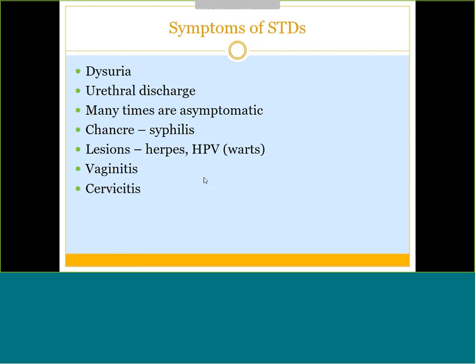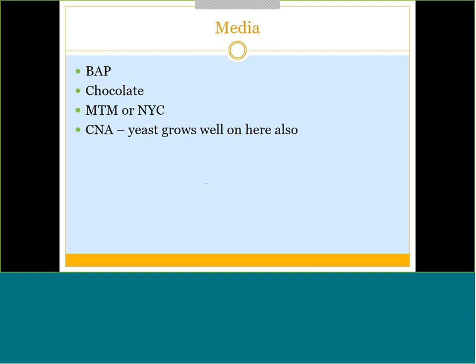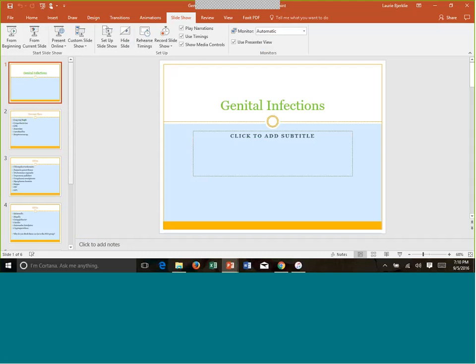Vaginitis is inflammation of the vagina; cervicitis is inflammation of the cervix. For agar plates, blood agar is used since it grows almost everything; chocolate agar is important because Neisseria and Haemophilus are possible pathogens. Modified Thayer-Martin, Martin-Lewis, or NYC agar are used when screening specifically for Neisseria gonorrhoeae. CNA agar can be added for yeast infections. Most genital testing, however, is done by molecular PCR — chlamydia and gonorrhea are typically run together on one swab. Herpes and HIV are diagnosed by blood tests for antibodies.